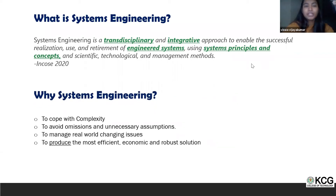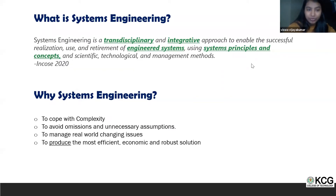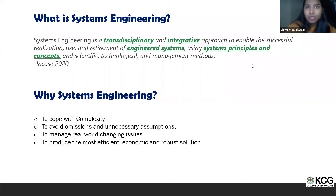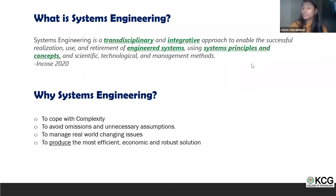Why is systems engineering flourishing? Today everything is complex, and systems engineering helps manage that complexity. It ensures stakeholder needs are properly captured, avoids omissions and unnecessary assumptions, helps manage real-world changing issues, and produces efficient, economic, and robust solutions. This is why most of the industry is moving towards the systems engineering framework. The concept was first introduced by NASA in their Apollo project.